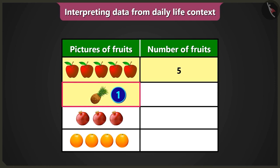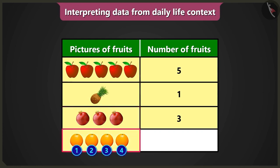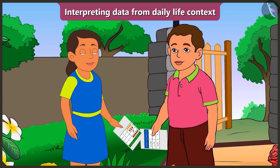Similarly, there is one picture of pineapple, so we have to write one in the column of number of fruits. There are three pictures of pomegranate, so we write three. There are four pictures of oranges, so we write four in the column of number of fruits. Absolutely right, Bubbly. Now you will be able to interpret the data given in the table. Yes, it is very easy to interpret the data given in the table.